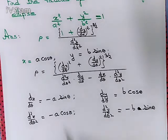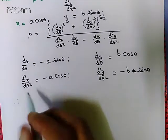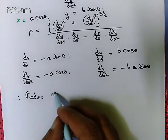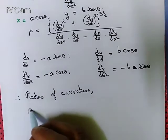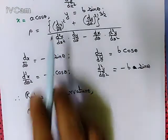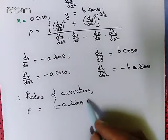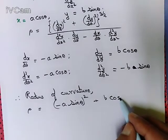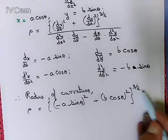We just need to put these values into the formula. Therefore, radius of curvature — we generally use the symbol rho — rho equals: dx/dθ = −a·sinθ, whole squared, plus dy/dθ = b·cosθ, whole squared, all to the power 3/2.